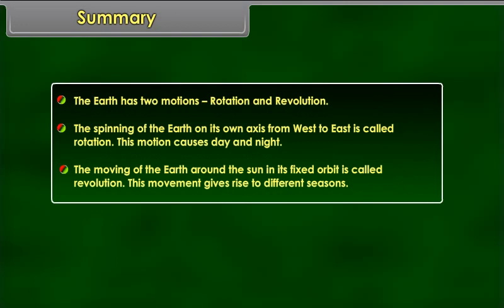Summary. The earth has two motions, rotation and revolution. The spinning of the earth on its own axis from west to east is called rotation. This motion causes day and night. The moving of the earth around the sun in its fixed orbit is called revolution. This movement gives rise to different seasons.